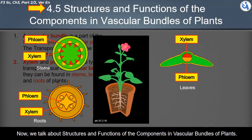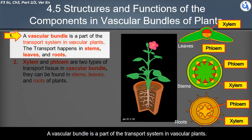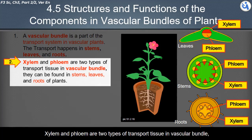A vascular bundle is part of the transport system in vascular plants. Transport occurs in stems, leaves, and roots. Xylem and phloem are the two types of transport tissue in a vascular bundle, and they can be found in stems, leaves, and roots of plants.